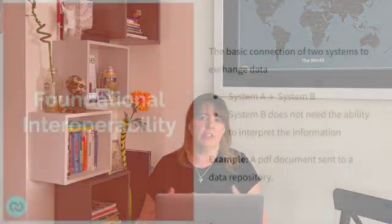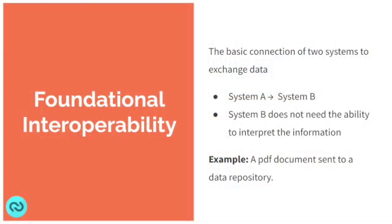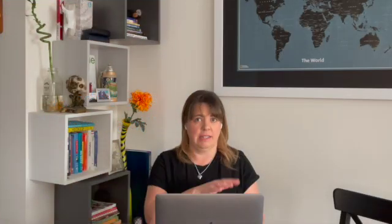First up, we're going to talk about foundational interoperability. Foundational interoperability is the most basic of the four types, and it is just the connection of system A to system B — sending data from one place to the other. An example of this would be a PDF document being sent from system A over to a data repository in system B. The entire document is sent en masse, filed in a long list of documents based on the date it was sent. An important thing to keep in mind is that the receiving system doesn't need the ability to interpret the data — it just needs to be able to receive it.